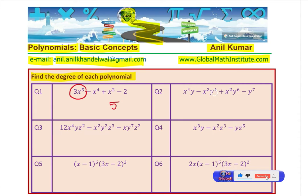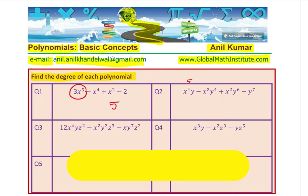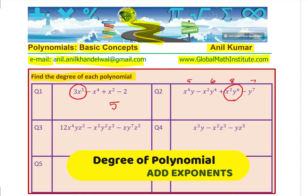The next one has many terms, 4 of them, but here we have two variables. Each term you have to count the degree. That is counted by adding the powers. So the first term has 4 plus 1, the second term 2 plus 4 which is 6, then 2 plus 6 is 8 and then 7. The highest happens to be for the third term which is 8 and therefore, the degree of this polynomial is 8.